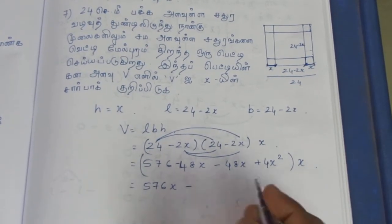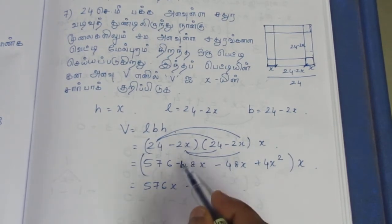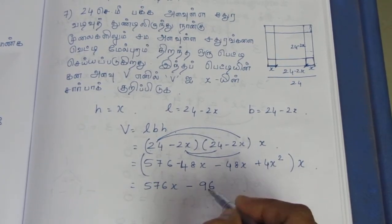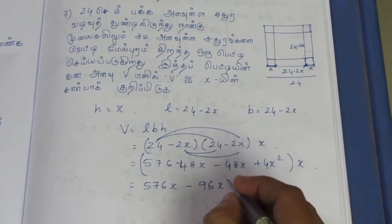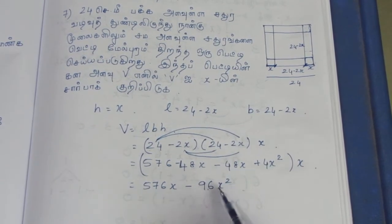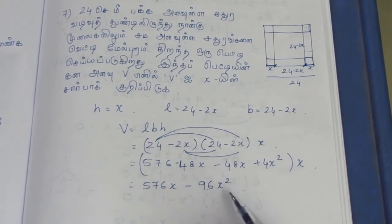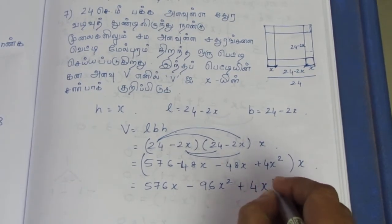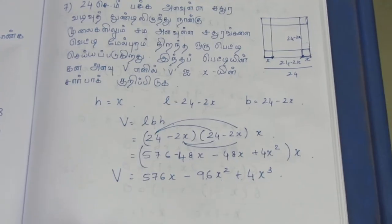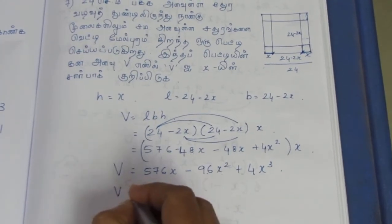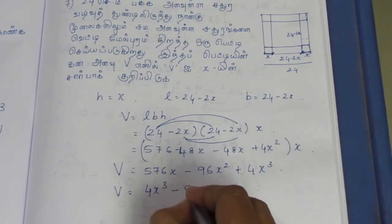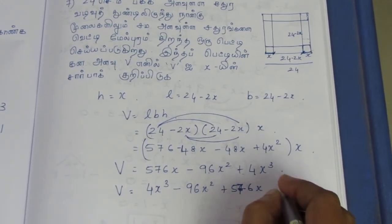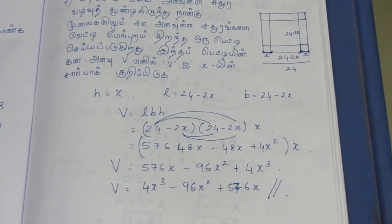So 96x — add these two: minus sign — plus x² into x gives x³. So 4x³ minus 96x² plus 576x. This is your final answer.